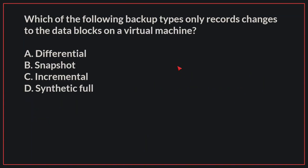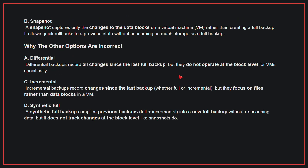Which of the following backup types only records changes to the data blocks on a virtual machine? The correct answer is B, snapshot. A snapshot captures only the changes to the data blocks on a virtual machine rather than creating a full backup. It allows quick rollbacks to a previous state without consuming as much storage as a full backup.